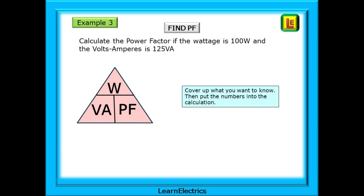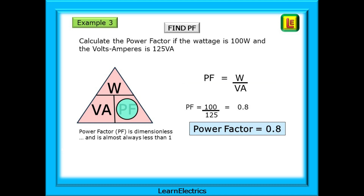Example 3 — find power factor: if the wattage is 100 watts and the volt amperes is 125 VA, PF equals 100 divided by 125, giving a power factor of 0.8 or 80%. Remember that power factor is dimensionless and will almost always be less than 1, or less than 100%.